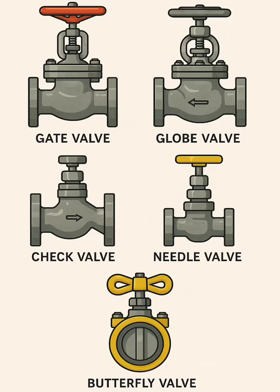Butterfly valve. Design: Has a flat circular disc mounted on a shaft inside the pipe. When turned 90 degrees, the disc goes from fully open to fully closed. Function: Used for quick shut-off and also moderate flow control.